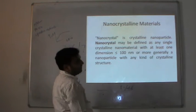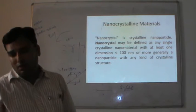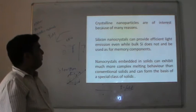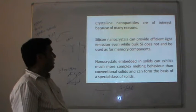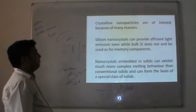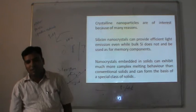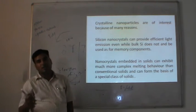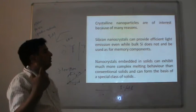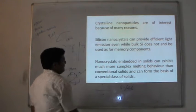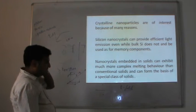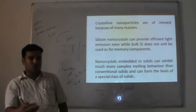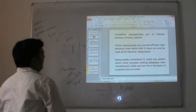Even zinc oxide forms a somewhat crystalline structure at 40 nanometres. Nanocrystalline particles are of interest for many reasons: silicon nanoparticles can provide efficient light emission even while bulk silicon cannot. Also, nanoparticles embedded in a solid can exhibit much more complex magnetic behavior than conventional solids and can form the basis of a special class of solids. By using nanoparticles, we can change the properties of material at the nano level. This covers the types of materials discussed: crystalline, amorphous, microcrystalline, quasi-crystalline, and nanocrystalline.